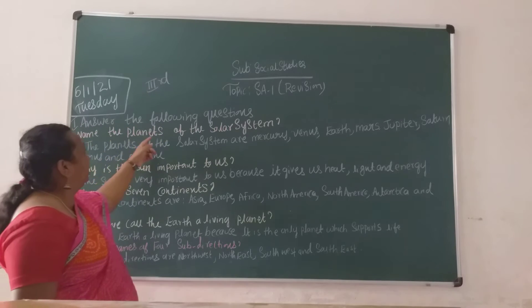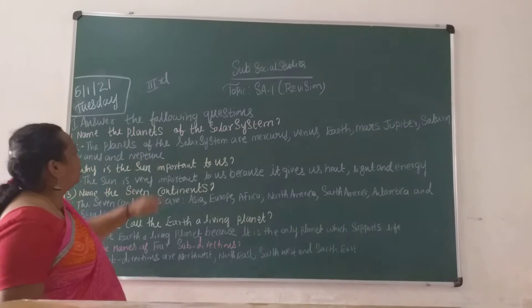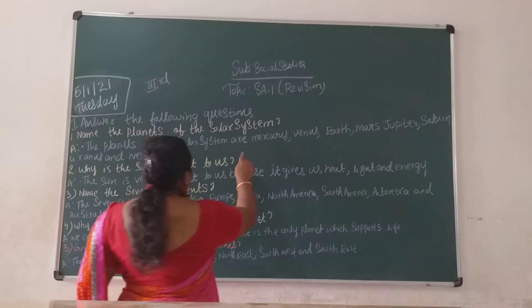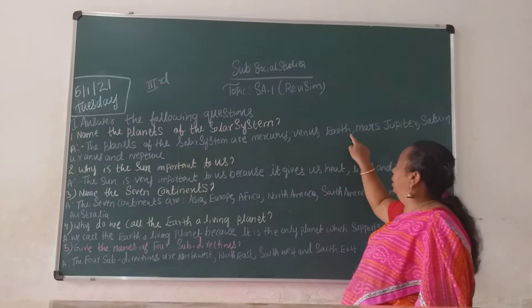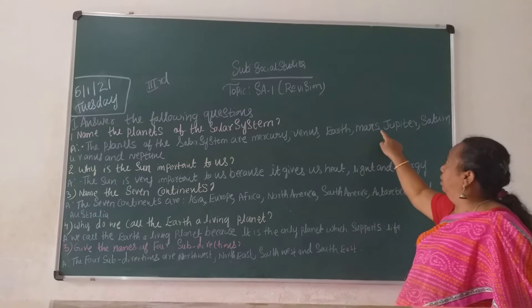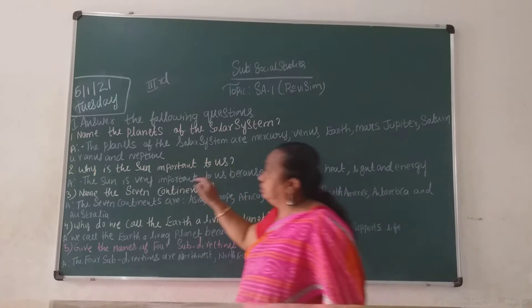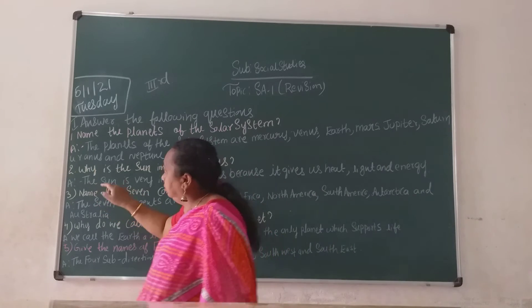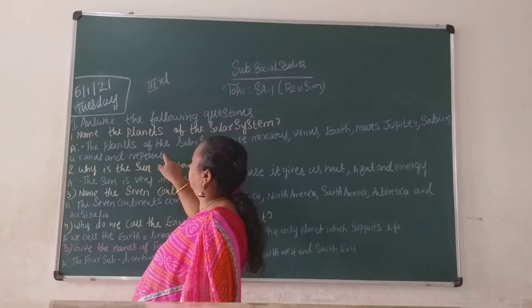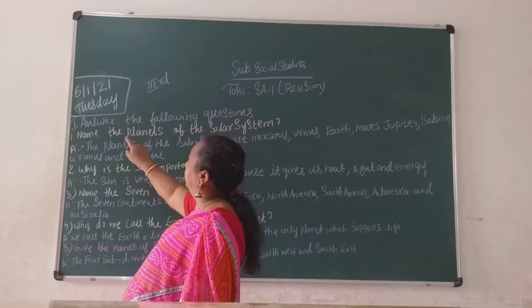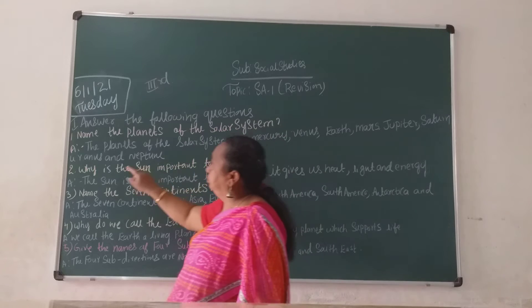Name the planets of the solar system. The planets of the solar system are Mercury, Venus, Earth, Mars, Jupiter, Saturn, Uranus and Neptune.